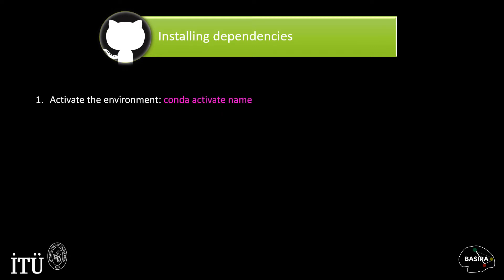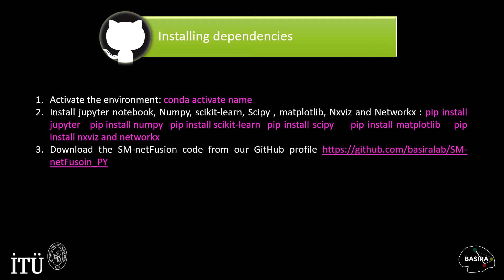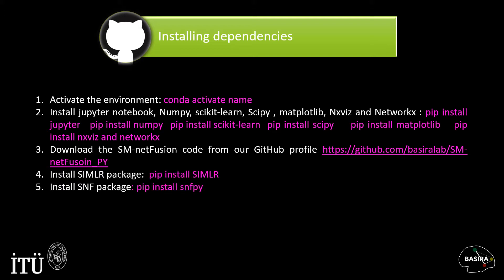To install the required packages, you first need to activate the environment you created by typing the following command in the terminal. You also need to install Jupyter Notebook, NumPy, Scikit-Learn, SciPy, Matplotlib, NXViz, and NetworkX packages. To do so, type pip install and add the name of the package you need. Next, in order to install Siamese and SNF packages, you need to first download our SMNetFusion code from the following GitHub link. Then type pip install siamese and pip install SNFpy in your terminal.